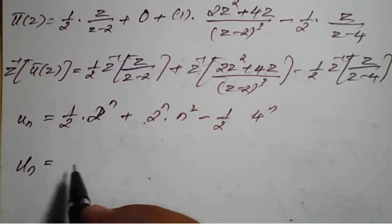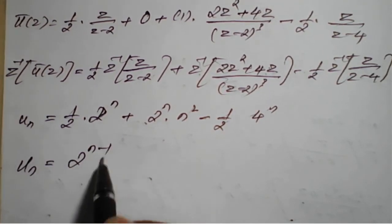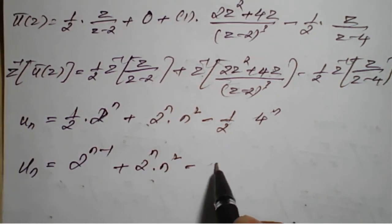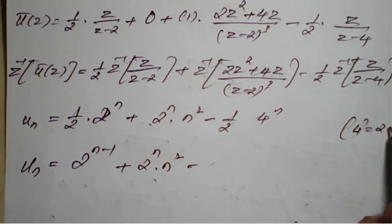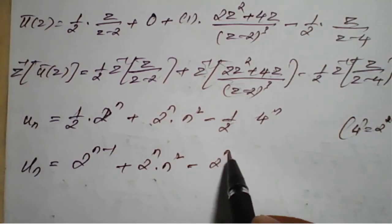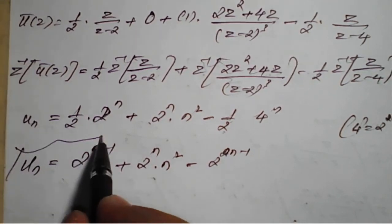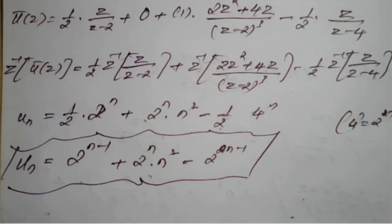Finally, U(n) = 2ⁿ/2 + 2ⁿ·n² - (1/2)·4ⁿ. Since 2ⁿ/2 = 2ⁿ⁻¹, and 4ⁿ = 2²ⁿ, so (1/2)·4ⁿ = 2²ⁿ⁻¹. Therefore U(n) = 2ⁿ⁻¹ + 2ⁿ·n² - 2²ⁿ⁻¹. This is the required solution using partial fractions and the standard Z-transform formulas for the constants A, B, C, D.